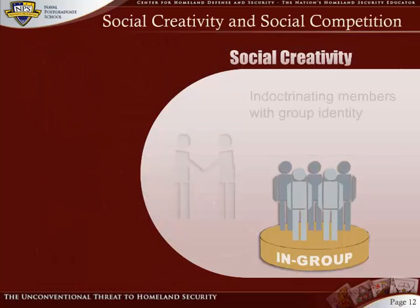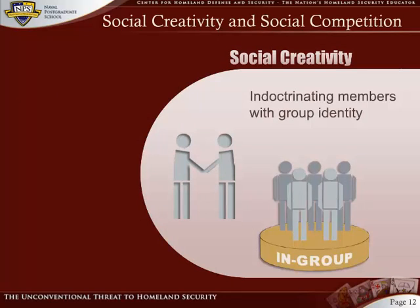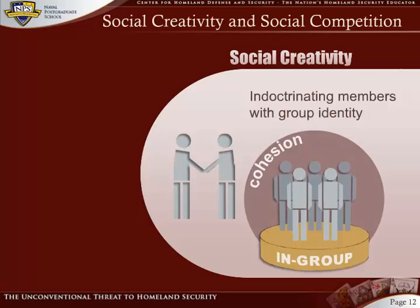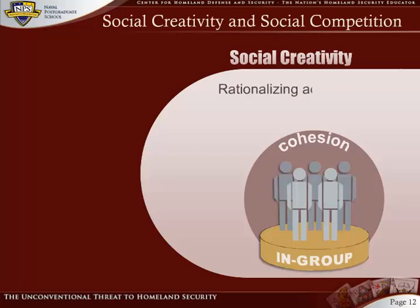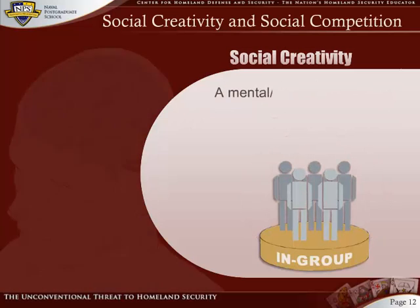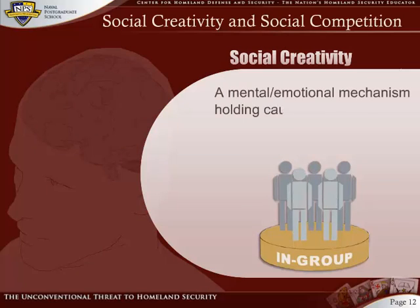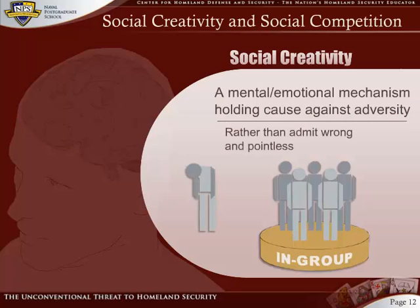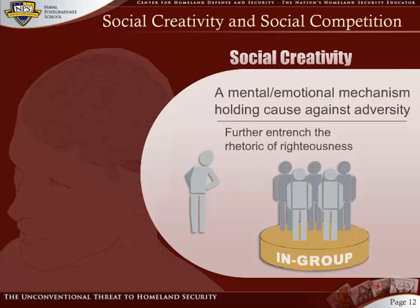Social creativity is largely a matter of indoctrinating group members with a new sense of their group's — and thereby their own — identity. All of this is done in order to protect, and perhaps enhance, group cohesion. Social creativity can be either a process of rationalizing adverse reality, or of sincere spiritual or ideological enlightenment. When we're talking about religious terrorist groups, it is most often both. Social creativity can be understood as a mental and emotional mechanism that enables group members to hold onto their cause in the face of objective adversity. Rather than admitting that what one has struggled and killed for has turned out to be wrong and pointless, the group will further entrench itself in its rhetoric of righteousness.